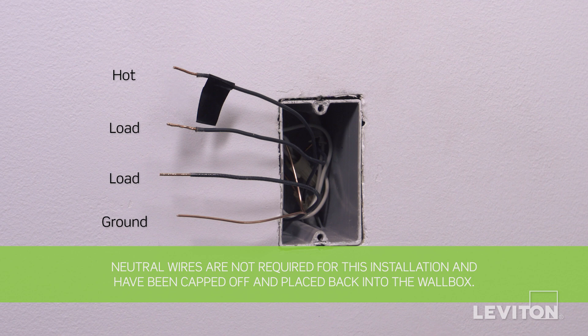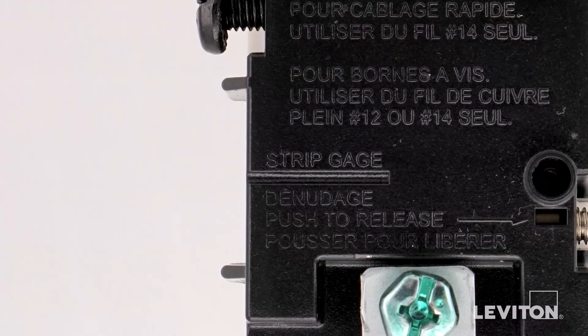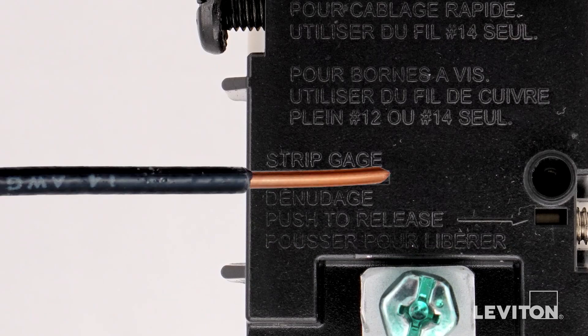Next, you need to be sure that the wires are prepared for installation. Start by making sure the wires are straight and stripped according to the strip gauge located on the back of the device.